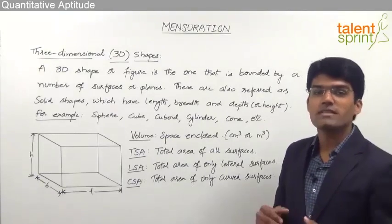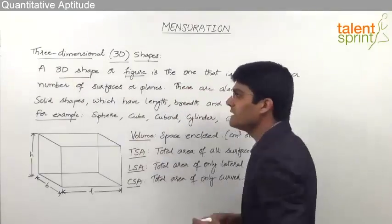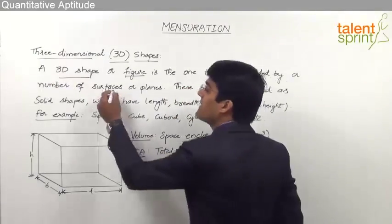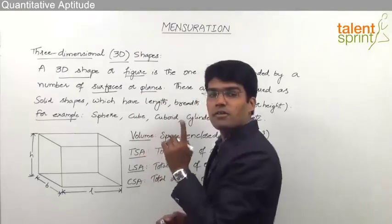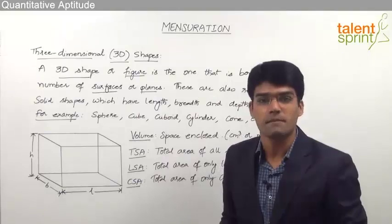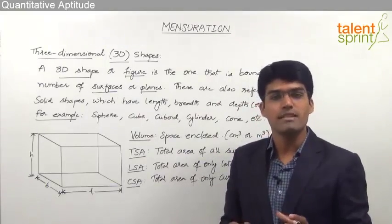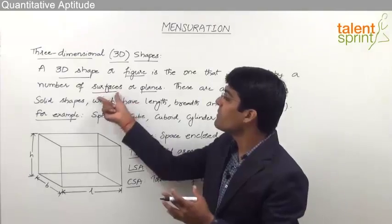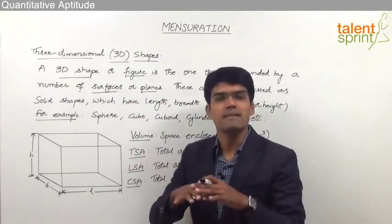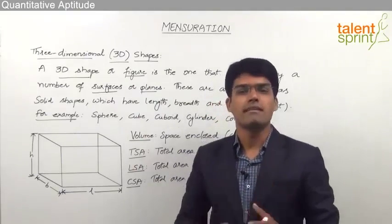A three-dimensional shape or a three-dimensional figure is nothing but the one which is bounded by a number of surfaces or planes. Now, a surface or a plane is nothing but a two-dimensional shape. So a 3D figure or a 3D shape is made up of a number of two-dimensional shapes, that is nothing but surfaces or planes. Whenever different surfaces are combined together, we get a three-dimensional shape.